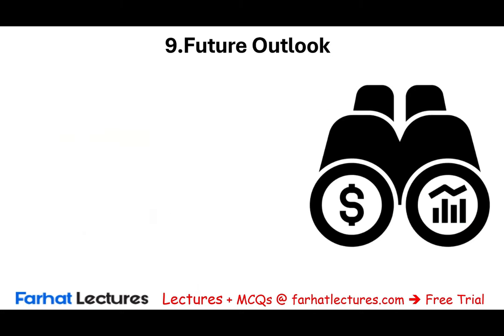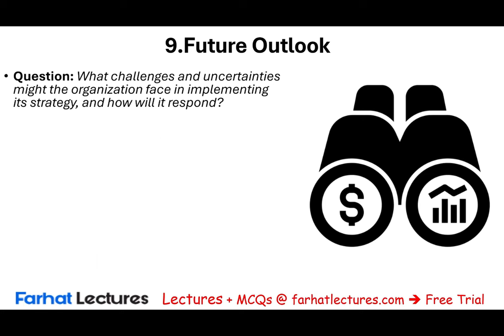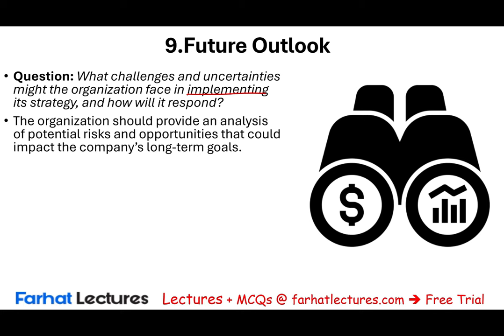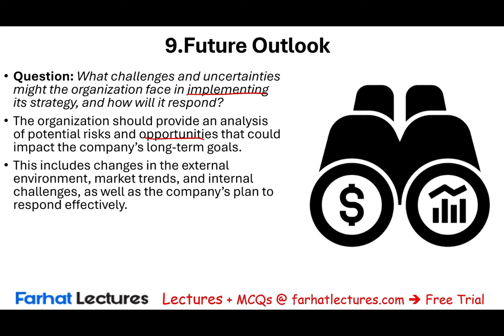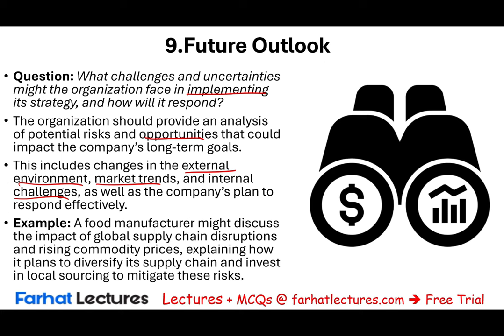The ninth content element is future outlook: what challenges and uncertainties might the organization face in implementing its strategy and how will it respond? The organization should provide an analysis of potential risks and opportunities that could impact the company's long-term goals, including changes in the external environment, market trends, and internal challenges. For example, a food manufacturer might discuss the impact of global supply chain disruptions and rising commodity prices, explaining how it plans to diversify its supply chain and invest in local sourcing to mitigate these risks — especially relevant after COVID-19.